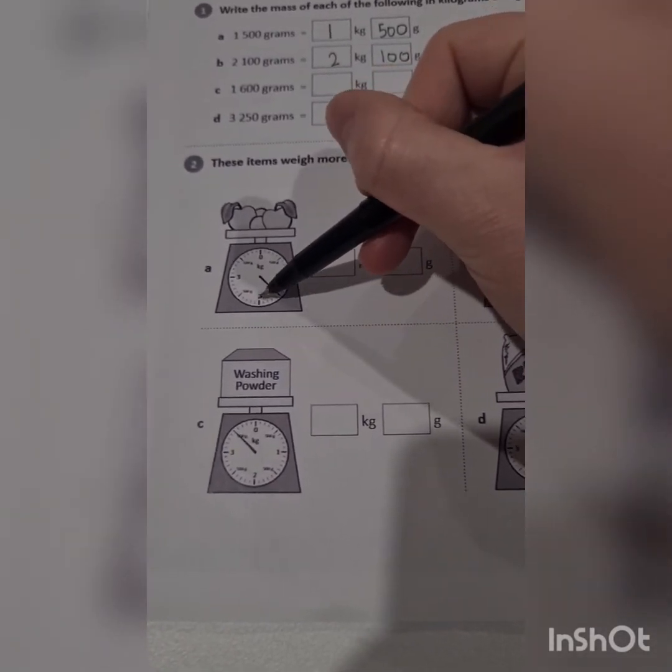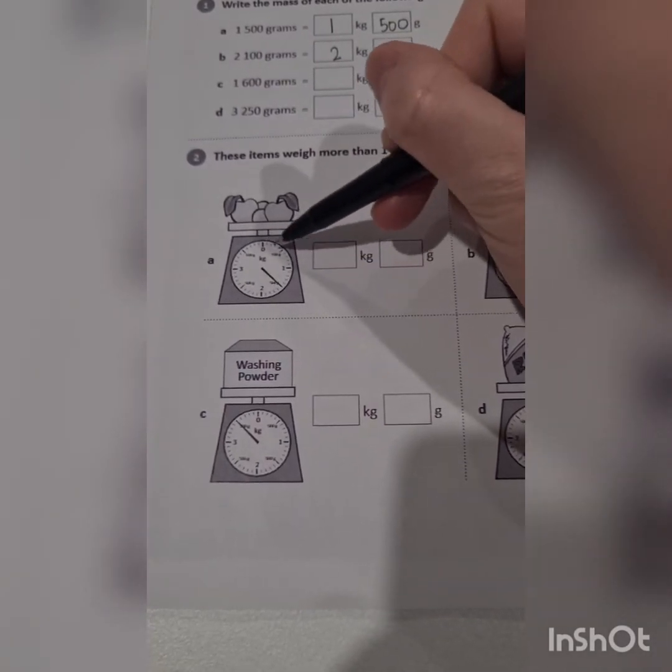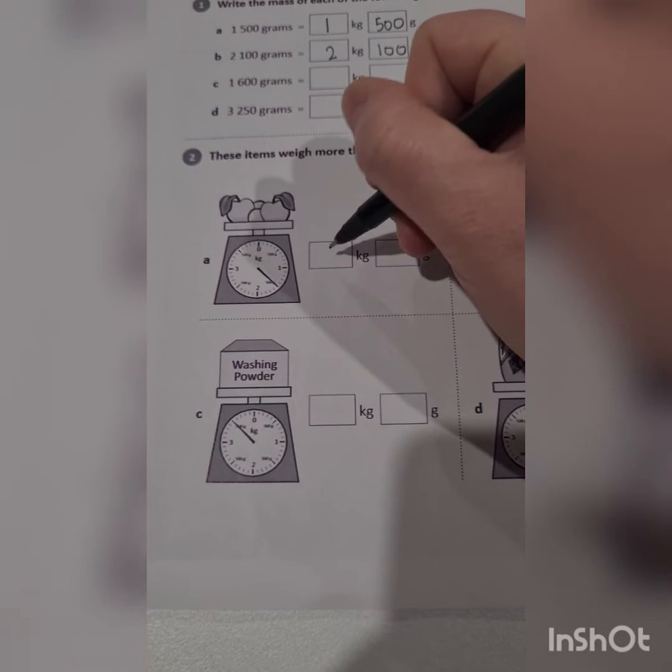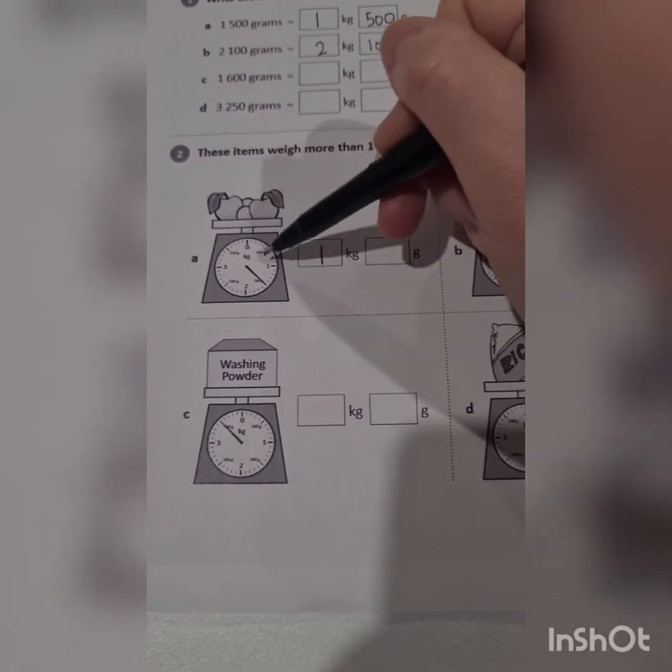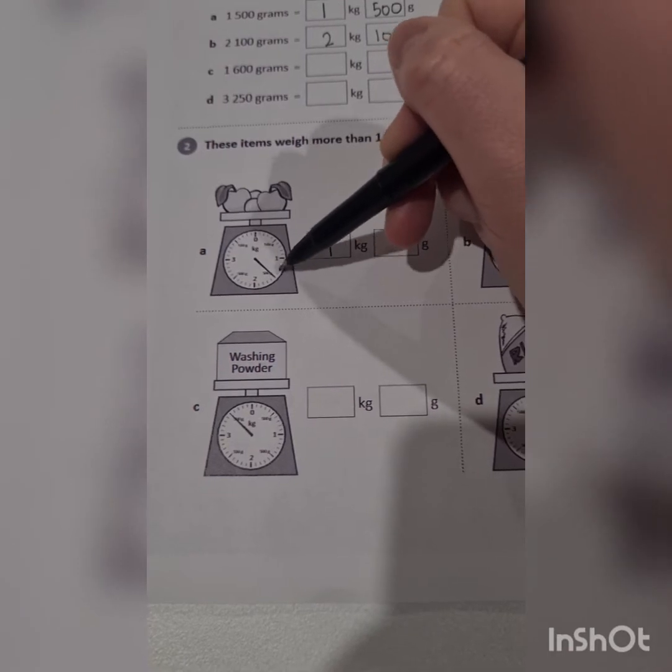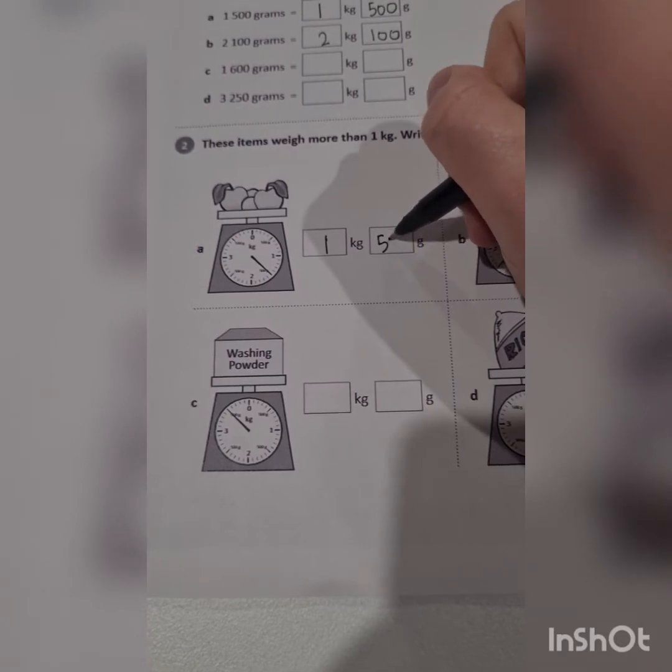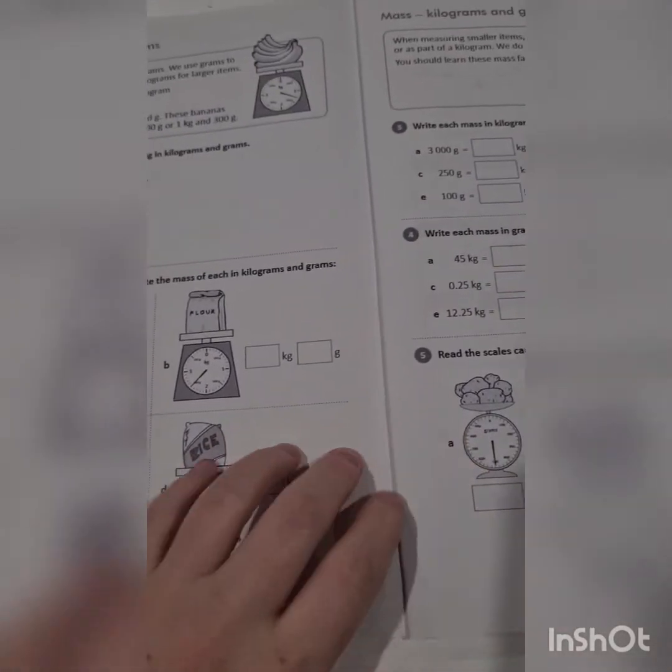We can see that there's 0 and then there's 1, so that means it's reached the 1 kilo mark, 2, 3. This is more than 1 kilo. It's a bit like reading a clock, so it's at least 1 kilo there. And how many grams? I'm going to guess because it's halfway between the 1 and 2, and even though I can't completely read that number properly, it's going to be 500 grams.